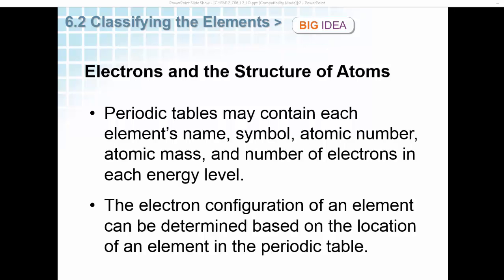Periodic tables may contain each element's name, symbol, atomic number, atomic mass, and number of electrons in each energy level. The electron configuration of an element can be determined based on the location of an element on the periodic table.